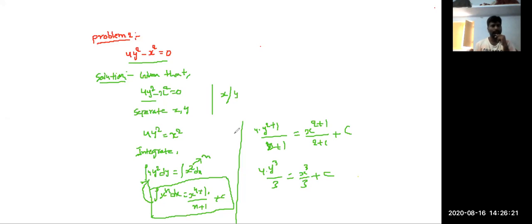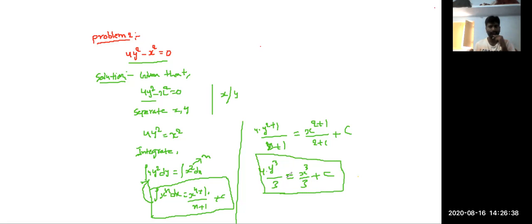So the general solution of the given differential equation 4y squared minus x squared equals zero is: 4y cubed divided by 3 equals x cubed divided by 3, plus c.